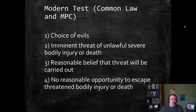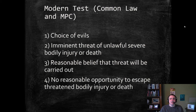Choice of evils needs to be explicitly handled in both justification necessity and in duress. For example, if you're only under duress of being slapped across the face, you cannot commit a bank robbery — that would not meet the choice of evils prong. The second prong is imminent threat of unlawful, severe bodily injury or death, very similar to justification necessity with this imminent and clear harm.